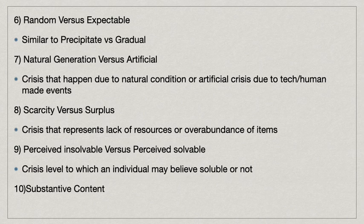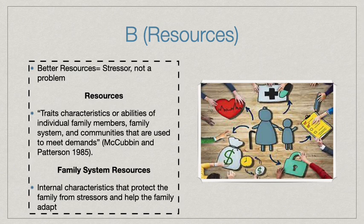Number eight is scarcity versus surplus, which is a crisis representing a lack of resources or an overabundance of items. Number nine is perceived insolvable versus perceived solvable, which is the degree to which an individual believes the crisis is solvable or not. Number ten is substantive content. Moving on to B, which is resources — the better the resources a family has, the less of a problem a stressor becomes. McCubbin and Patterson define resources as traits, characteristics, or abilities of individual family members, the family system, and communities used to meet demands.